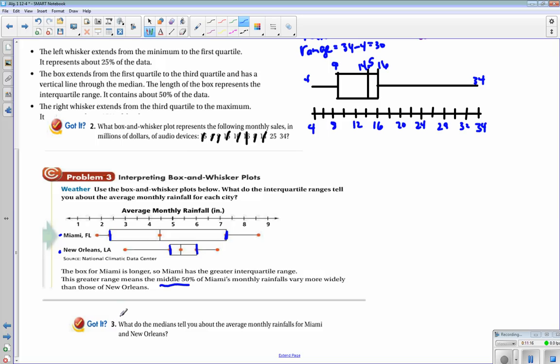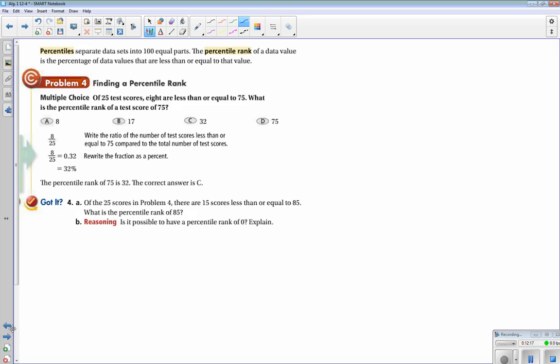And then let's see if we can answer this number three. What do the medians tell you about the average monthly rainfall for Miami and New Orleans? The medians are here and here. It says that New Orleans has a higher average than Miami, so New Orleans is on average going to get more rain. New Orleans gets more average rain than Miami because the median is higher.